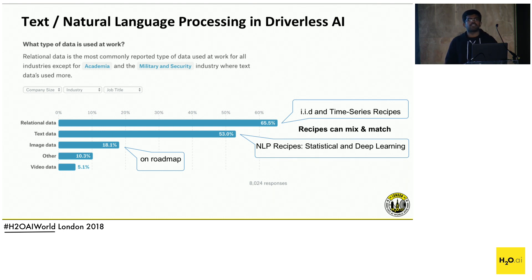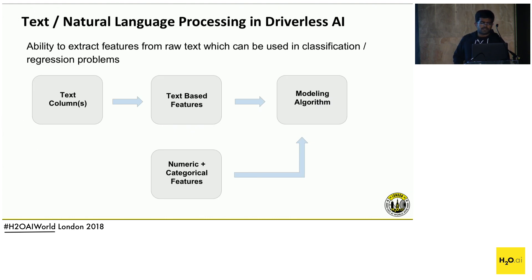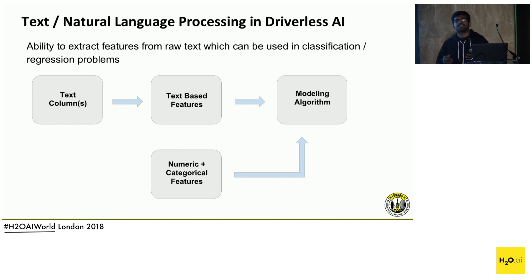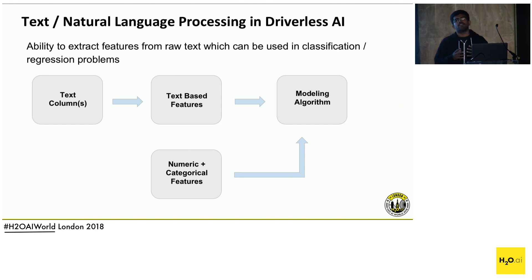To begin with, we started with a text classification recipe. This is the capability we currently have inside Driverless AI: given text features, we extract multiple text-based features from those text columns, and then feed them as inputs to our modeling algorithms that run inside Driverless AI.